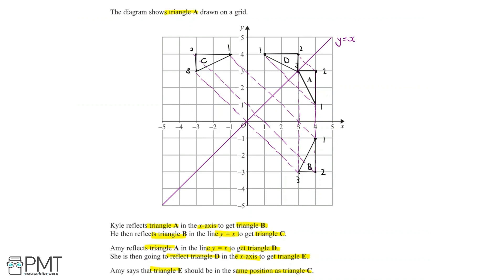Amy then reflects triangle D in the x-axis to get triangle E. Point 1 is 4 squares above the x-axis at x equals 1, so counting 4 squares below gives us point 1. Point 2 is also 4 squares above the x-axis at x equals 3, so point 2 is at the coordinates (3, −4). Finally, point 3 is 3 squares above the x-axis at x equals 3, so reflecting it gives the point (3, −3). Joining these dots together gives us triangle E.